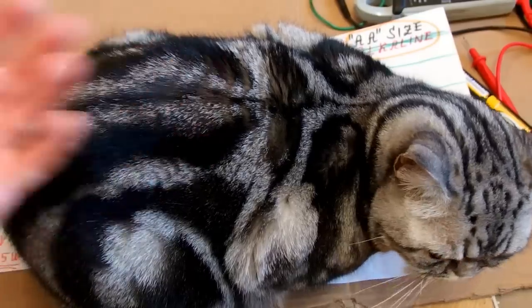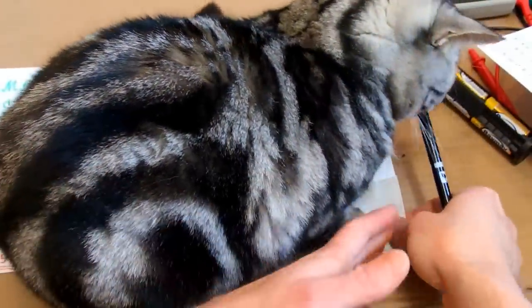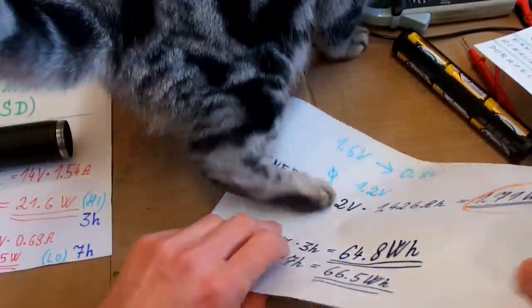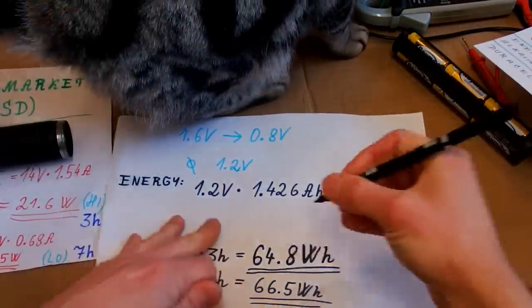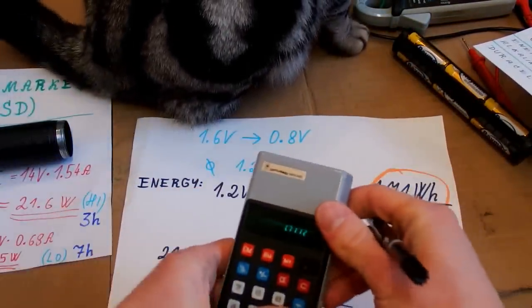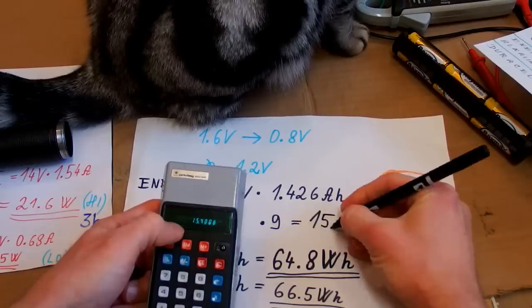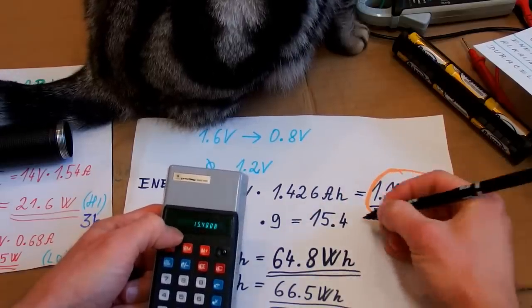And here is the cat on my paper again. And this is one of those batteries. Now I have to calculate how much energy is in 9 of them. So let's multiply this by 9. And this is times 9. About 15.4 watt hours.